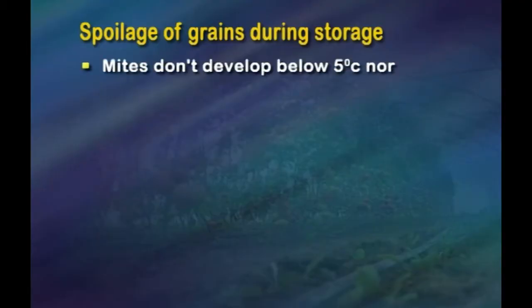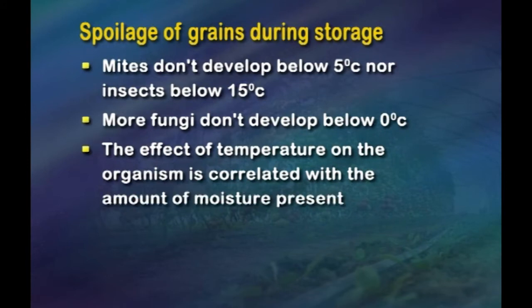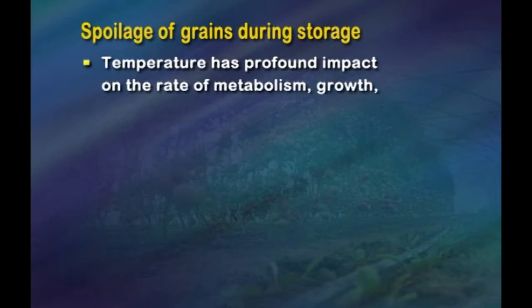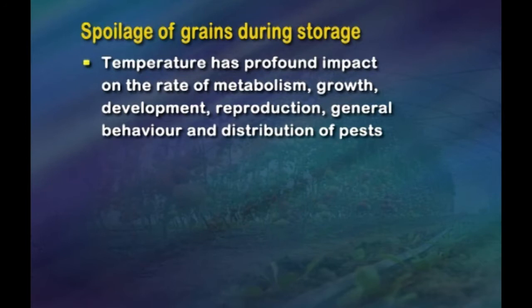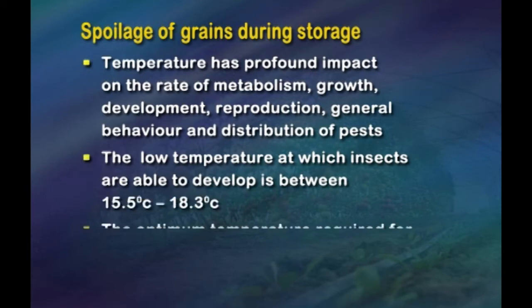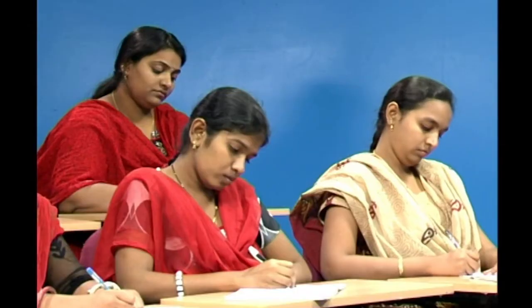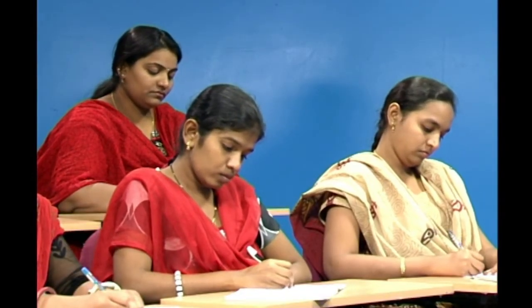Some important points to be considered during storage of grains: mites don't develop below 5 degrees Celsius, nor insects below 15 degrees Celsius. Most storage fungi don't develop below 0 degrees Celsius. The effect of temperature on organisms is correlated with the amount of moisture present — a rise in temperature corresponds to a decrease in moisture content. Temperature has a profound impact on the rate of metabolism, growth, development, reproduction and distribution of pests. The low temperature at which insects are able to develop is between 15.5 to 18.3 degrees Celsius; the optimum temperature for most insects is 29.4 to 32.2 degrees Celsius; and the fatal high temperature for insects ranges from 50 to 56 degrees Celsius.